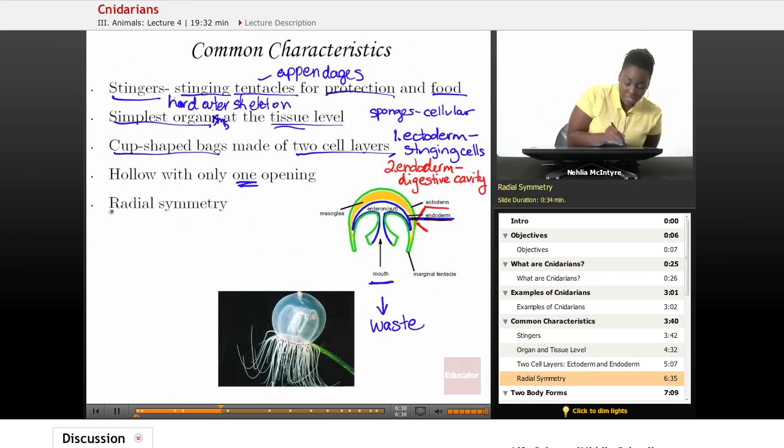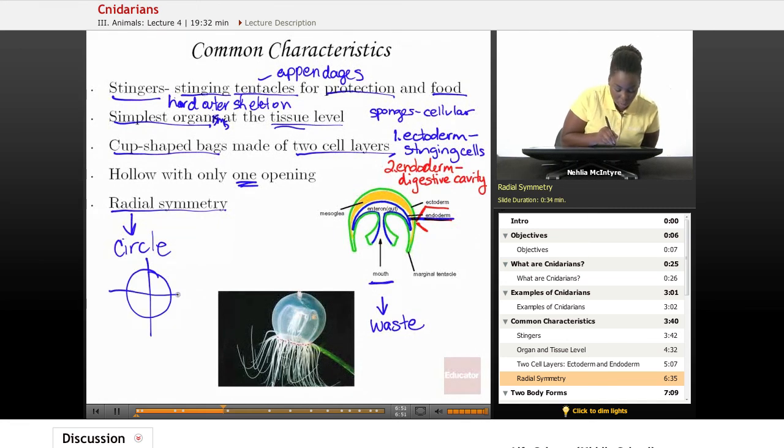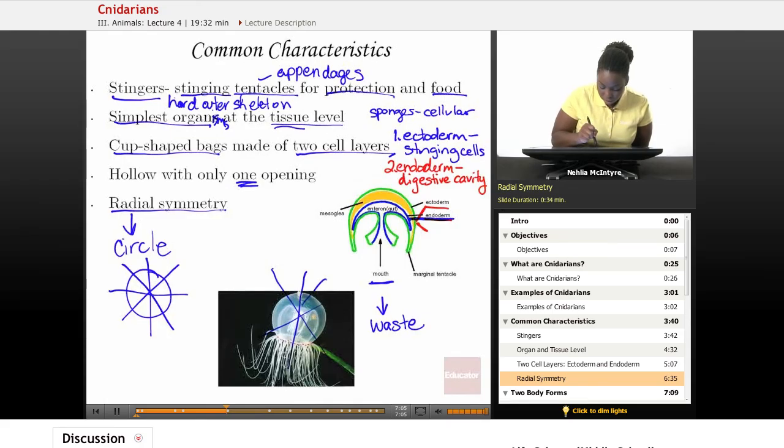Finally, all Cnidarians share what we call radial symmetry, and that means that their body arrangement is based upon a circle. So if you were to cut a Cnidarian in equal parts, it would be cut so that wherever you cut it on the circle, you could make equal parts around it. That's just like you could see here in this jellyfish. If you were to do the same thing, you could see that radial symmetry.